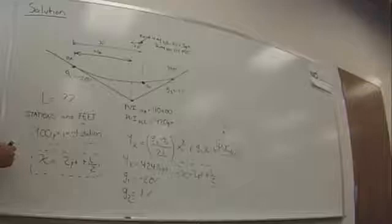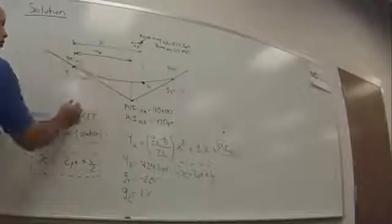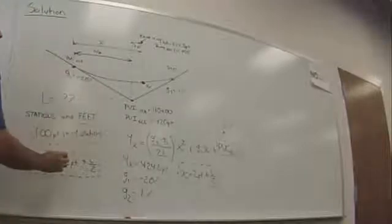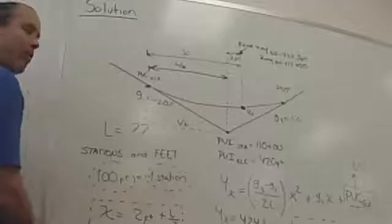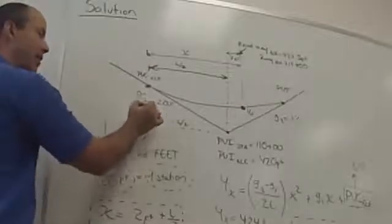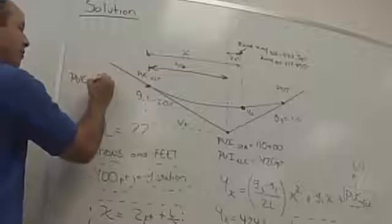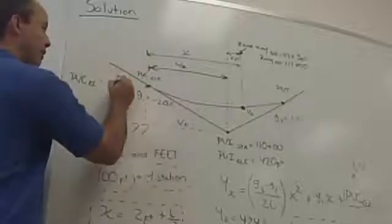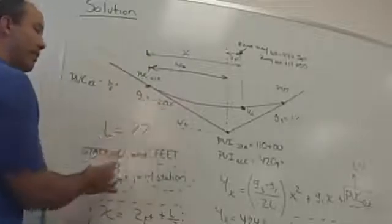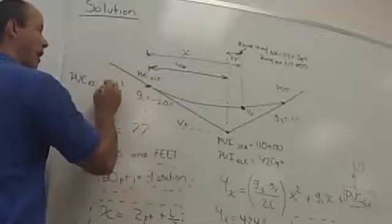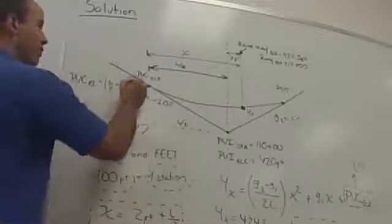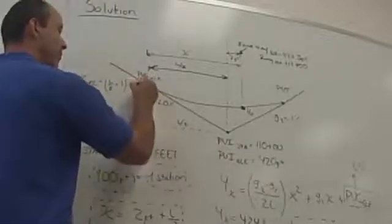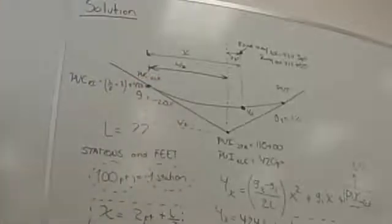So what's PVC elevation? PVC elevation is this point right here. So what I'm going to do is I'm going to take, what is this distance right here? We know this is L half. So if I want to find this elevation, PVC elevation is equal to what? L half times this in a station will be 2.